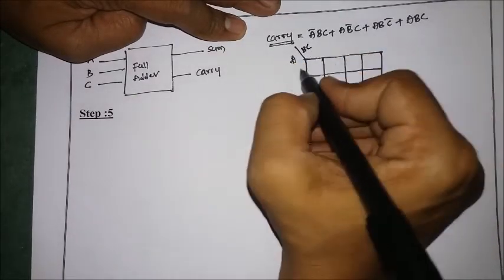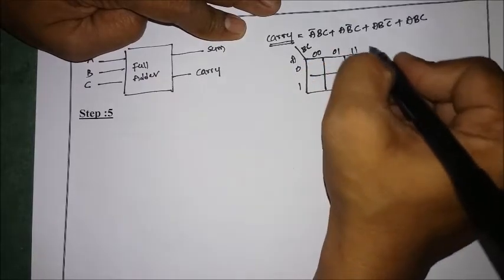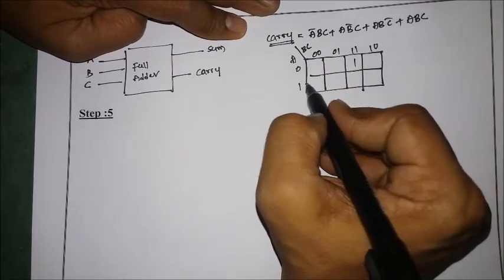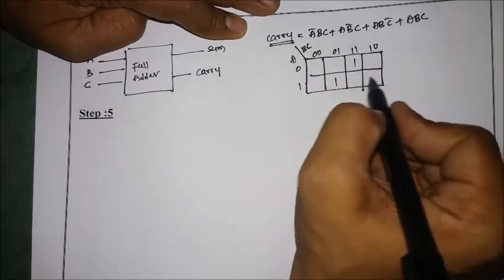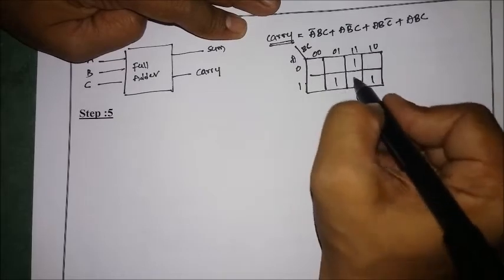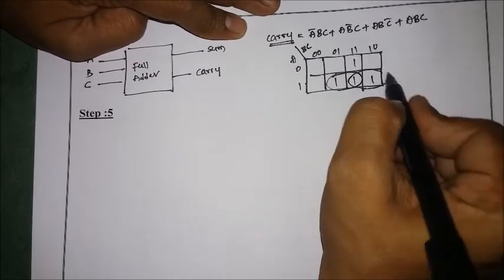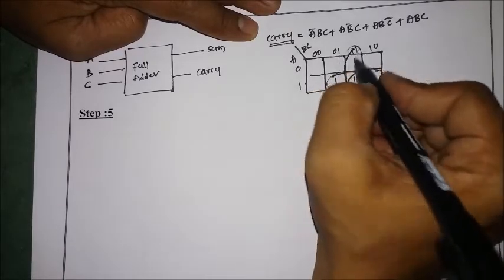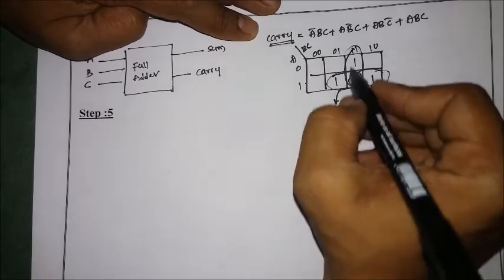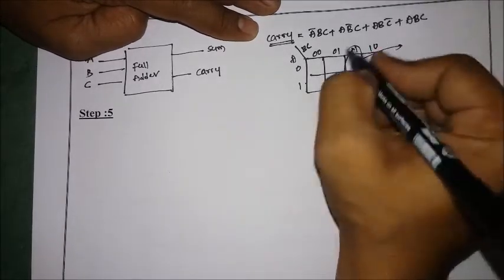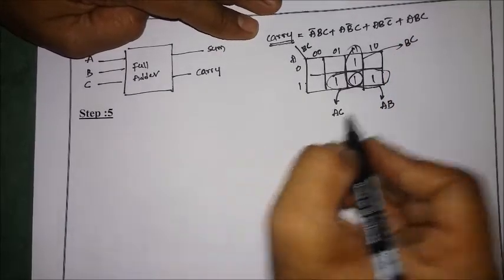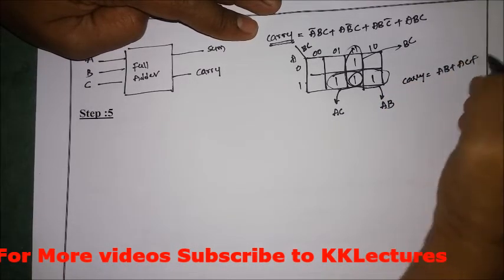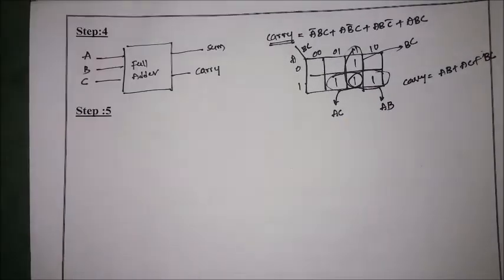Using a three-variable K-map for carry with inputs A, B, C: placing the minterms at positions 011, 101, 110, and 111. Grouping pairs: these two give A·C, these two give A·B, and these two give B·C. Therefore, carry = A·B + A·C + B·C.